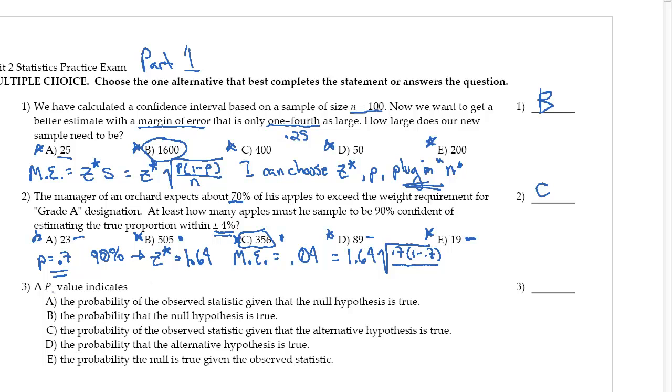So the p-value indicates what? Now, remember, I told you the p-value is centered on p. So the idea is it's the probability of the observed statistic given the null hypothesis is true. Because it's sitting on p. And so the answer here is A.